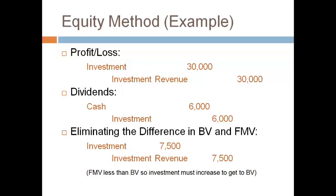The equipment has a fair market value that was less than book value at the time of purchase, so the investment account must be increased to get back up to book value. Remember that the investment account, represented by fair market value, must move in the direction to get to book value. Also remember, no adjustment is made for the portion that is related to goodwill.